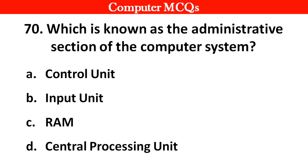Next question: Which is known as the administrative section of a computer system? Options A. Control unit, B. Input unit, C. RAM, D. Central processing unit. Right answer is option D: Central processing unit. Thank you.